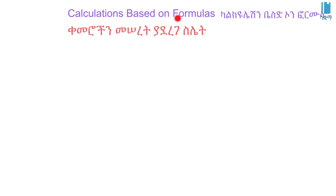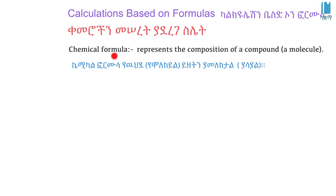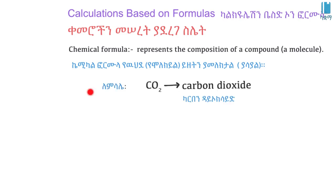The chemical formula represents the composition of a compound or a molecule. For example, this chemical formula represents carbon dioxide.